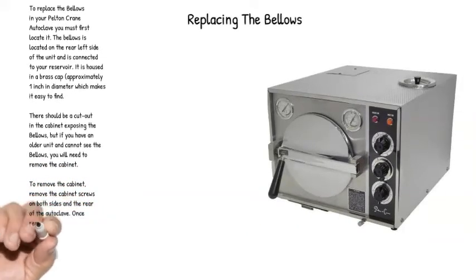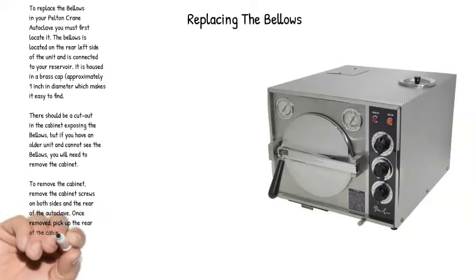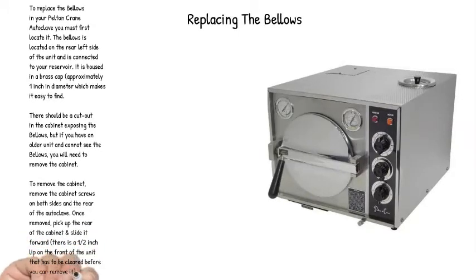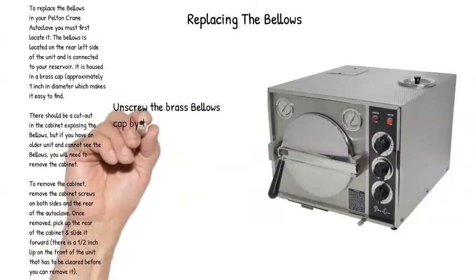To remove the cabinet, remove the cabinet screws on both sides and the rear of the autoclave. Once removed, pick up the rear of the cabinet and slide it forward. There is a half inch lip on the front of the unit that has to be cleared before you can remove it.